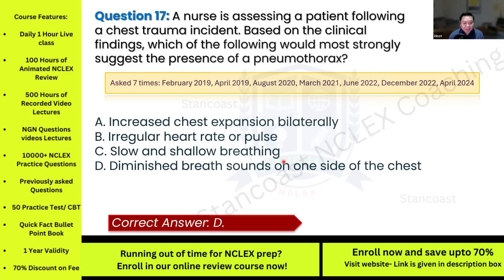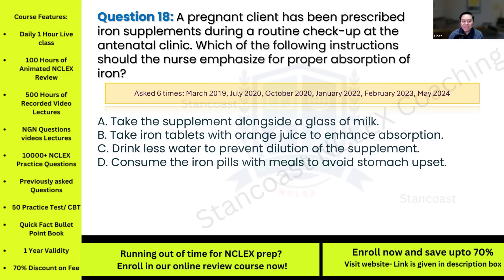Diminished breath sounds on one side is the most definitive clinical finding suggestive of pneumothorax, while the other options do not align with typical signs of this condition. Question eighteen: A pregnant client has been prescribed iron supplements during a routine checkup at the antenatal clinic. Which instruction should the nurse emphasize for proper absorption of iron? This has been asked six times. Options: A) take the supplement alongside a glass of milk; B) take iron tablets with orange juice to enhance absorption; C) drink less water to prevent dilution of the supplement; D) consume the iron pills with meals to avoid stomach upset.